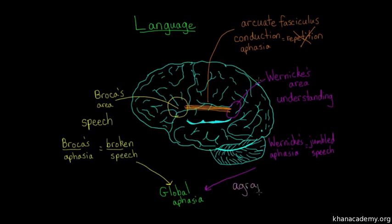We have agraphia, which is the inability to write, anomia, which is the inability to name things, and other specific difficulties in reading, spelling, grammar, pronunciation, all sorts of things you may not even realize that you do effortlessly with a healthy brain. But Broca's aphasia and Wernicke's aphasia are the most common.